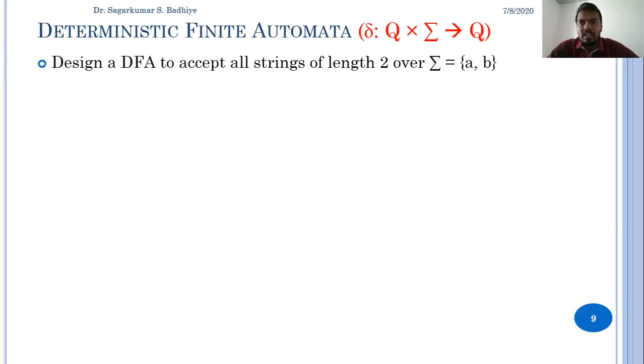Consider an example to design a DFA to accept all strings of length 2 over Σ where Σ = {a, b}. Then the language generated will be L = {ab, ba, aa, bb}.